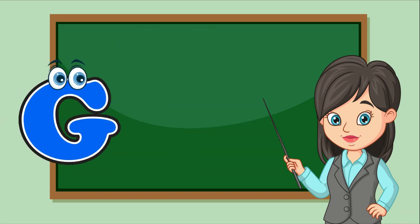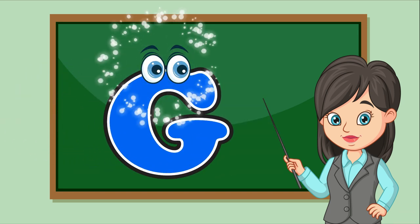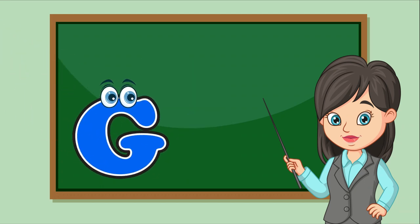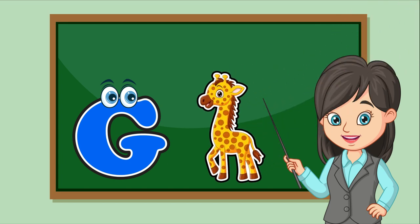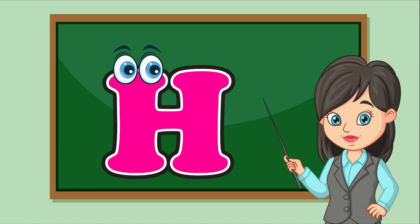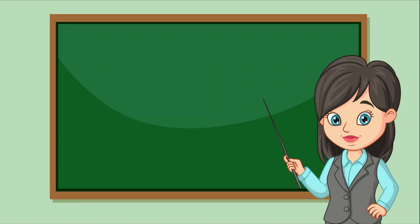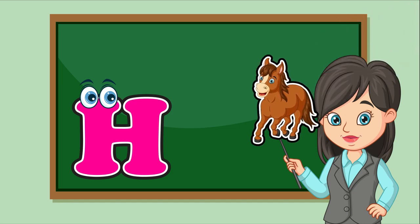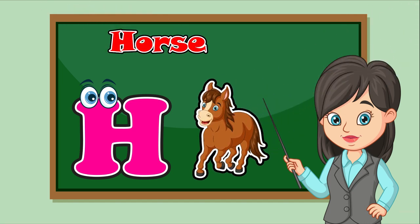F is for Fish, Fish. This is the letter H. H is for Horse, Horse.